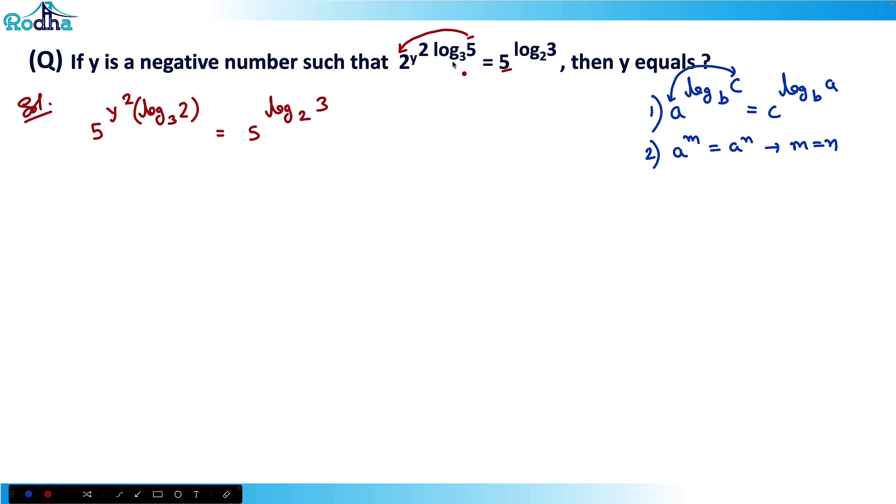So now this base has become equal, so I can use this second property now. So I can write here, now y square log 2 base 3 is equal to log 3 base 2.